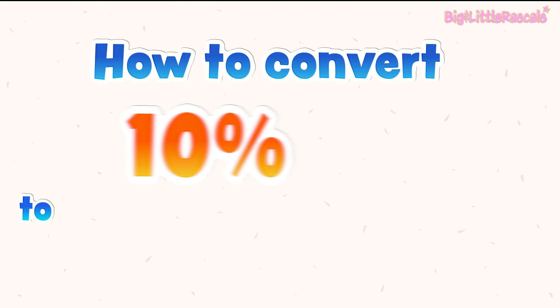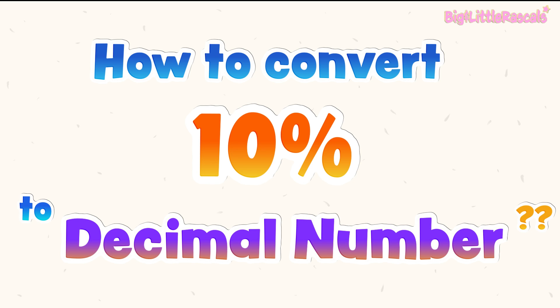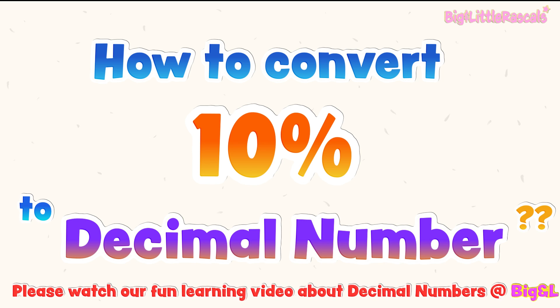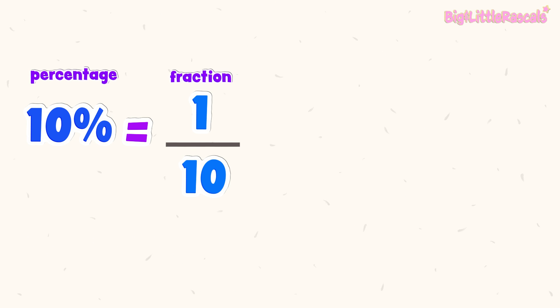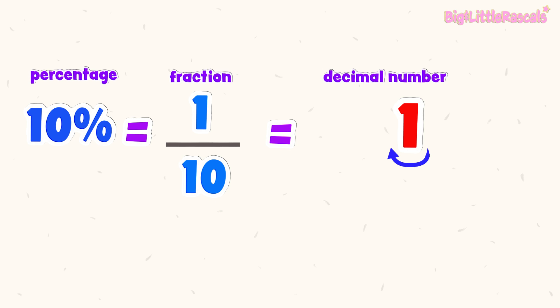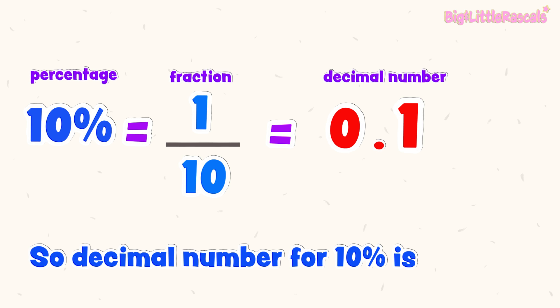Now, how to convert this 10% to decimal number? If you're not familiar with decimal numbers, not to worry — please watch our fun learning video about decimal numbers. 10% or 1 tenth in fraction — let's convert this to decimal number. If you recall our video about decimal numbers: 1 tenth — first let's put number 1, and because we have one zero at the bottom, we need to jump one time to the left. After we jump one time, we put the decimal point and put zero at the front, as this indicates that it is less than 1 whole. So the decimal number for 10% is 0.1.